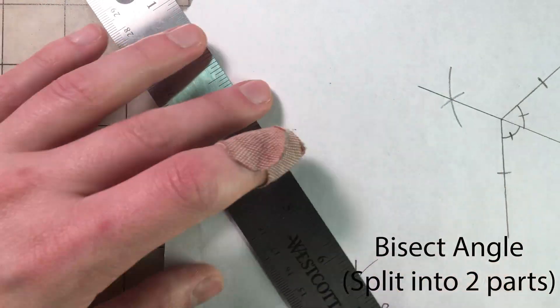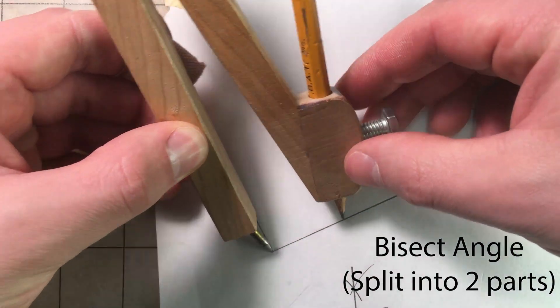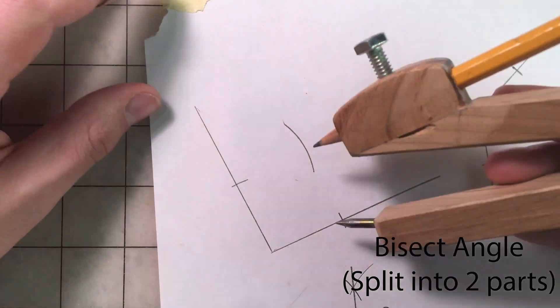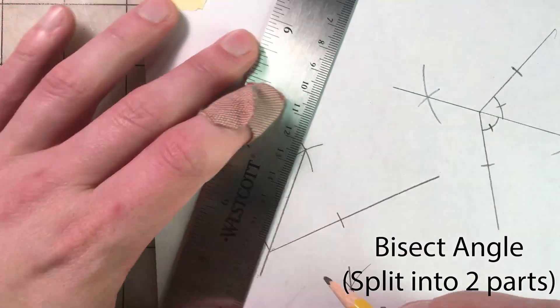From the angle's vertex, mark two arcs on the rays of the angle. Then anchor at one point and sweep an arc over the middle of the angle's opening. Do the same for the marked point on the other ray. The line from the angle's vertex to this intersection bisects the angle.